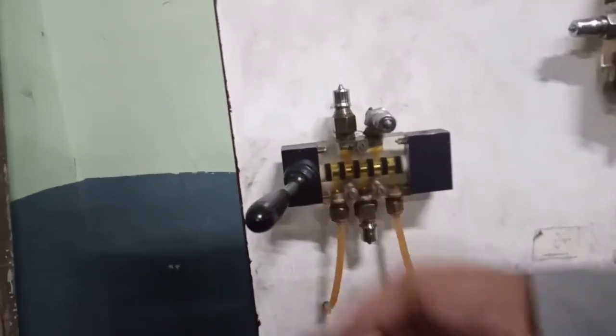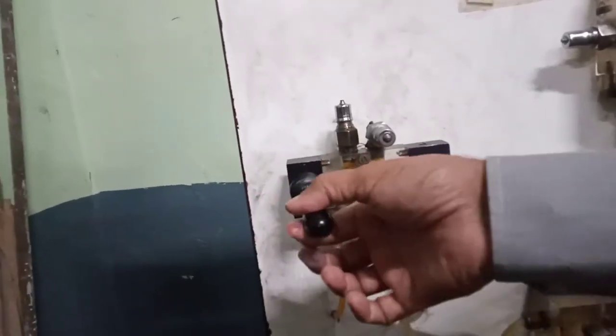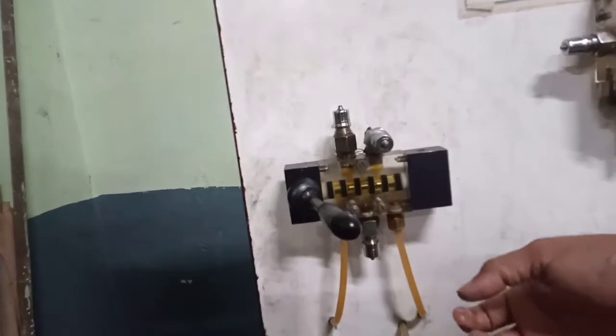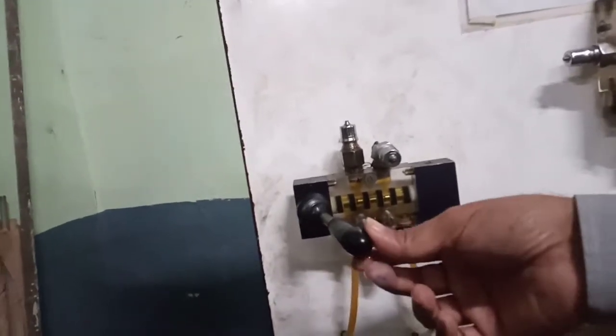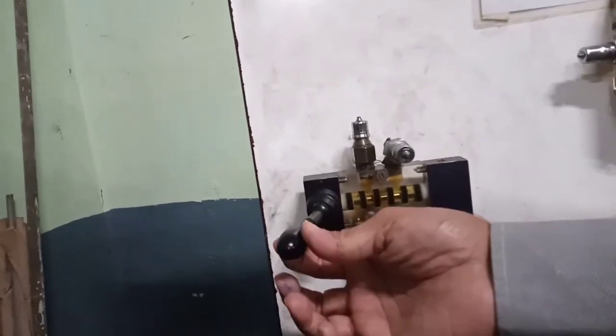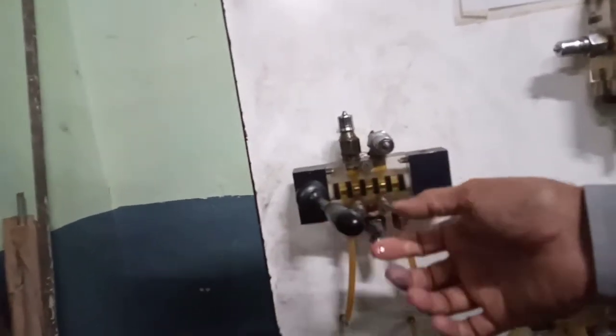And how many positions? See. 1, 2, 3. So, which type of valve it is? 5 by 3. 5 by 3. Hydraulic. Detained. This is detained. Right. So, we have three slots in which this lever fits in.